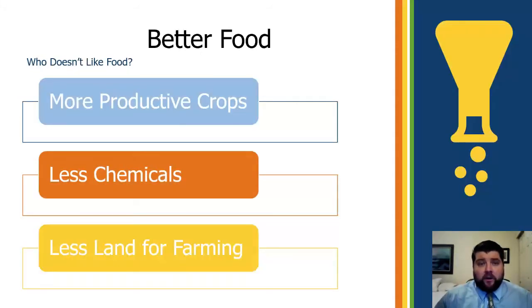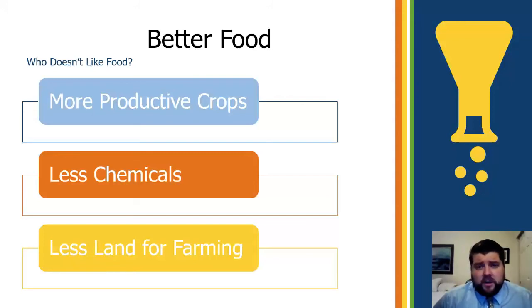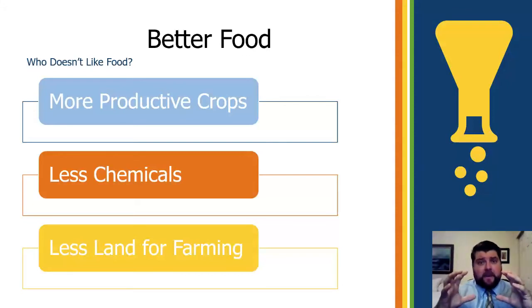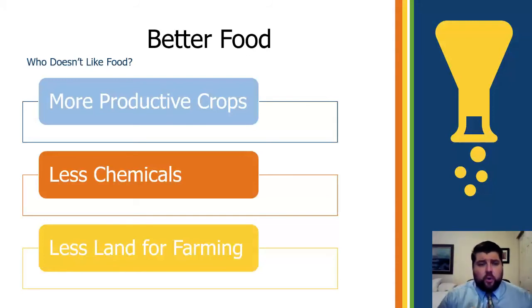One of the cool things about CRISPR-Cas9 is it's going to give us bigger, better foods. CRISPR-Cas9 could allow us to have more productive crops with less chemicals and more land for farming, which ultimately means a more sustainable human population. These are technologies which are very important for the progress of our species.